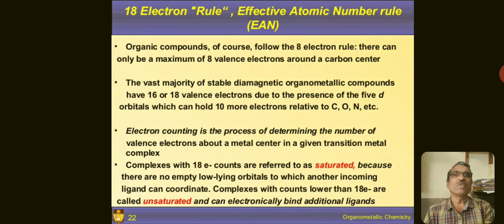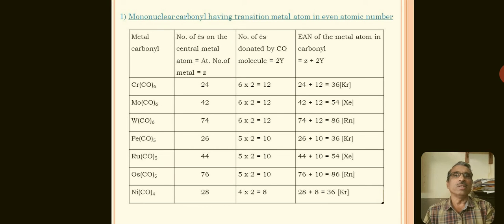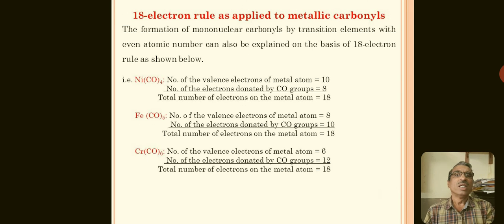On this slide, the 18-electron rule is summarized. A table gives the EAN of various mononuclear carbonyls: chromium hexacarbonyl, molybdenum hexacarbonyl, tungsten hexacarbonyl, iron pentacarbonyl, and others. The 18-electron rule as applied to metal carbonyls is also presented here in terms of electron counts, which we have already discussed.